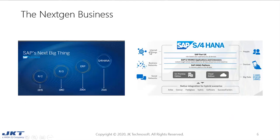In 1992, SAP introduced the three-layer architecture in which processing was split across three layers: client, application, and database. In 2004, when the web was formally established, SAP developed a new integration application platform called SAP Netweaver. All SAP applications could run on a common platform, and customers and partners were able to integrate existing applications easily with widely adopted web standards. SAP R3 was now renamed SAP ERP, which is part of a larger family known as the SAP Business Suite, containing line-of-business applications such as SAP CRM, SRM, and so on.